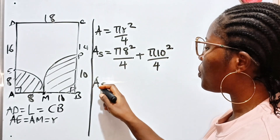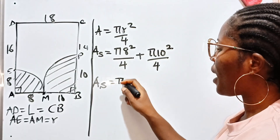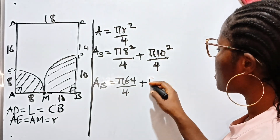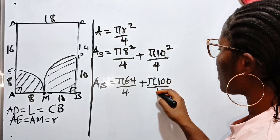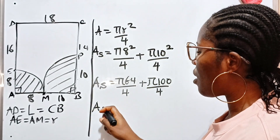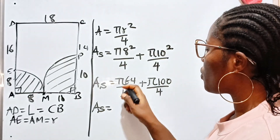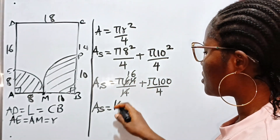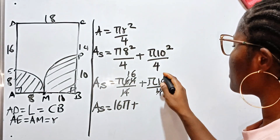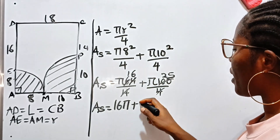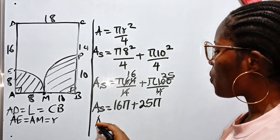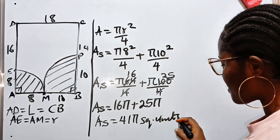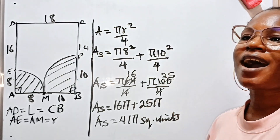So the area of the shaded portion equals π times 64 over 4, plus π times 100 over 4. That gives us 16π plus 25π. Therefore, the area of the shaded portion equals 41π square units. Thank you so much for watching, and see you in my next video.